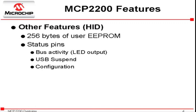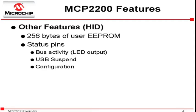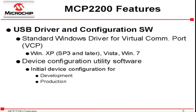Other features include 256 bytes of general purpose user EEPROM. The device also has alternate functions multiplexed onto some of the GPIO, which include bus activity LED pins, USB suspend, and a configuration status pin. The MCP2200 uses the standard Windows drivers and supports Windows Service Pack 3 or later, Vista, and Windows 7.